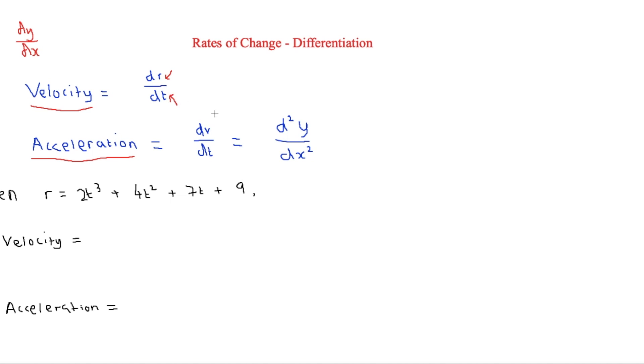Then acceleration is going to be velocity over time again. And this is the other bit of notation that we need to know, and this is the second derivative, and that's d²y over dx².